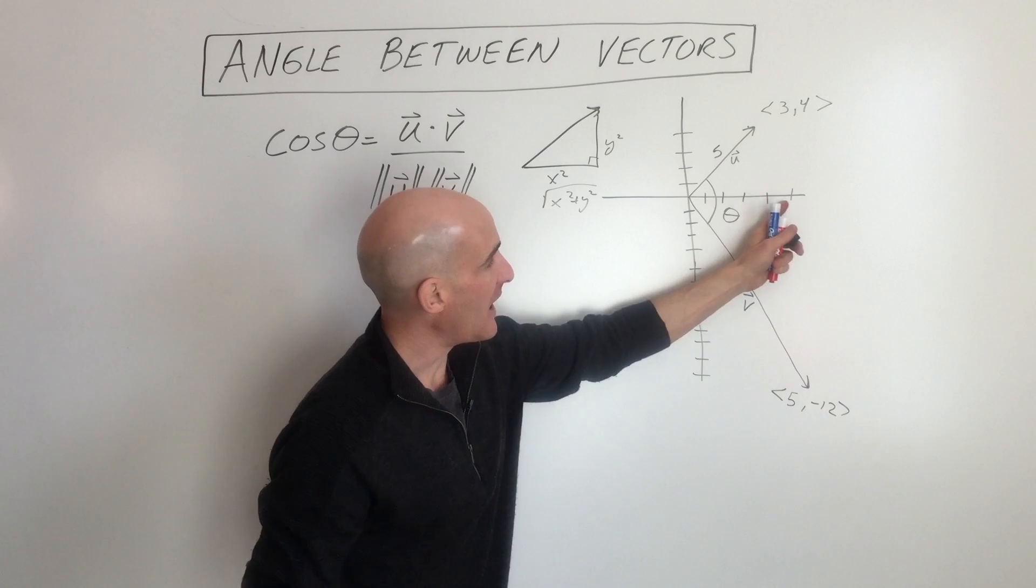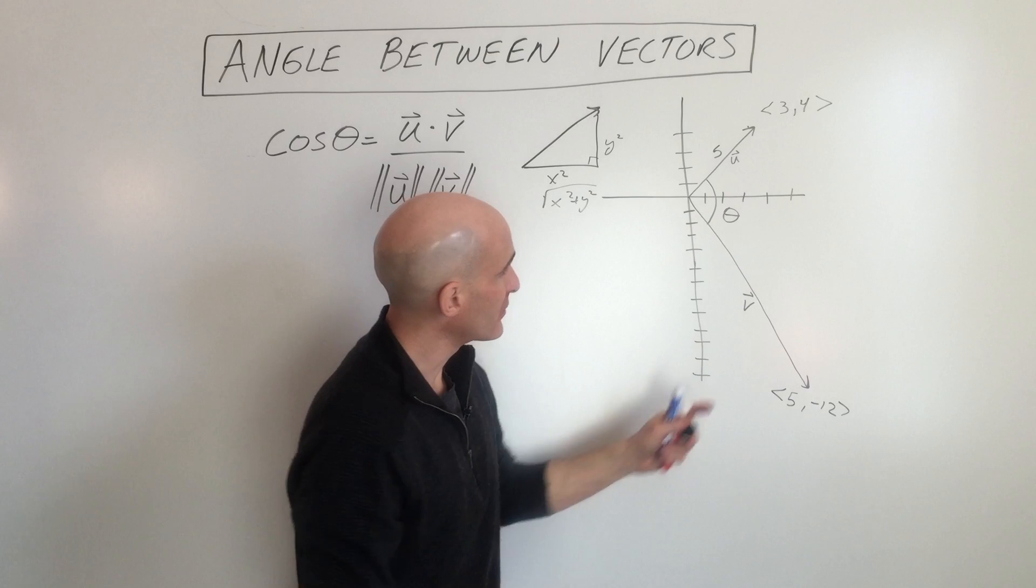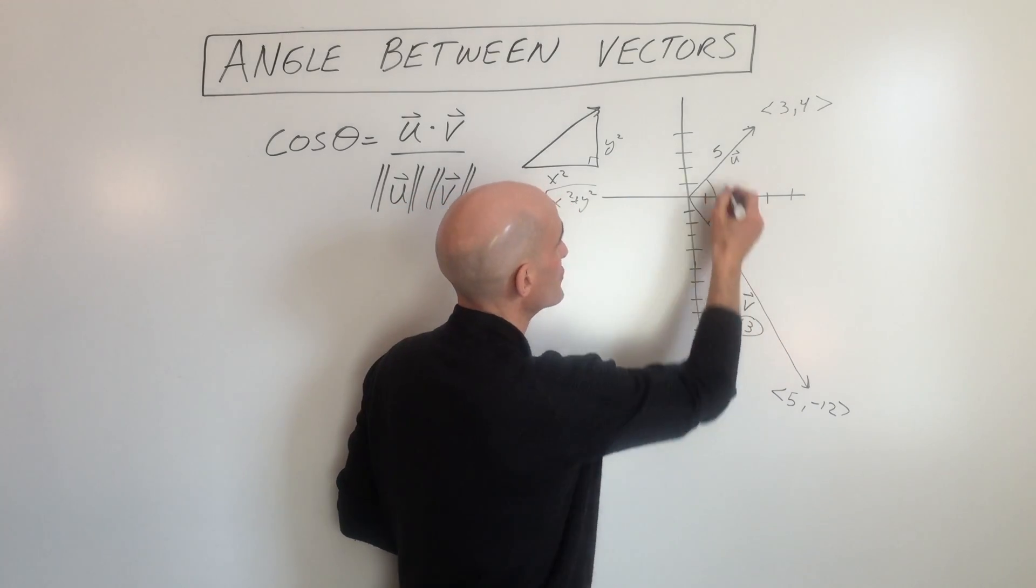This vector here, vector v, is 5, negative 12. So we're going right 5 down 12, and if we do the Pythagorean theorem for that one this is going to have a magnitude of 13.